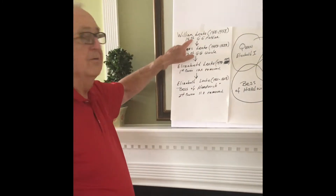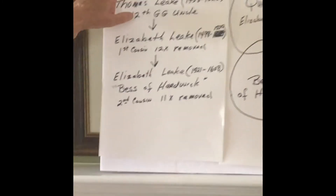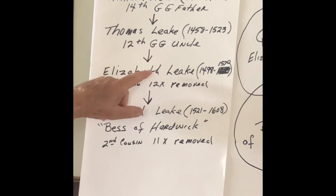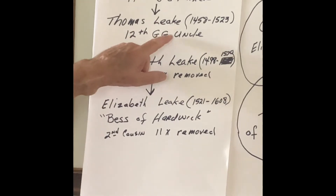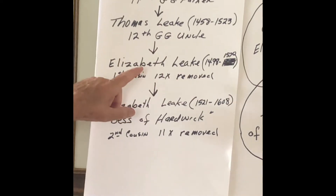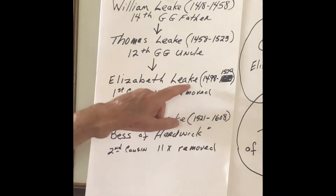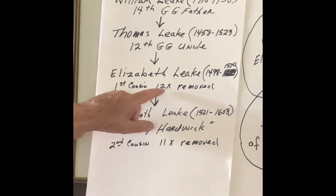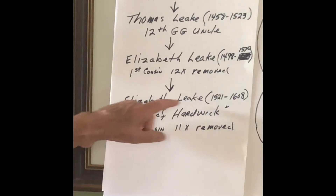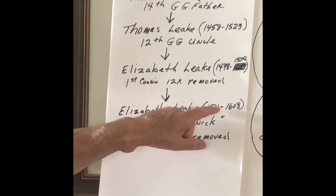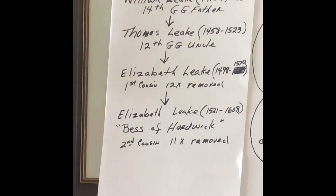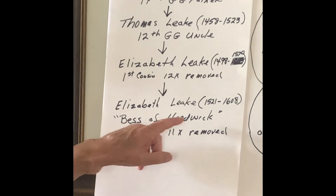Now I'm going to talk to you about my 14th great-grandfather, who was William Leek. He had a son, Thomas — my 12th great-great-uncle — and then his daughter was Elizabeth Leek. She was my first cousin, 12 times removed. Elizabeth Leek, born 1521, and she's best known in history as Bess of Hardwick.